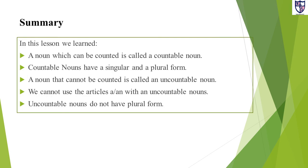I hope you have understood today's topic. Let's review what we have learnt: a noun which can be counted is called a countable noun; countable nouns have a singular and a plural form. A noun that cannot be counted is called an uncountable noun; we cannot use the articles a and an with uncountable nouns; and lastly, uncountable nouns do not have a plural form. Thank you for watching. Have a good day. Allah Hafiz.